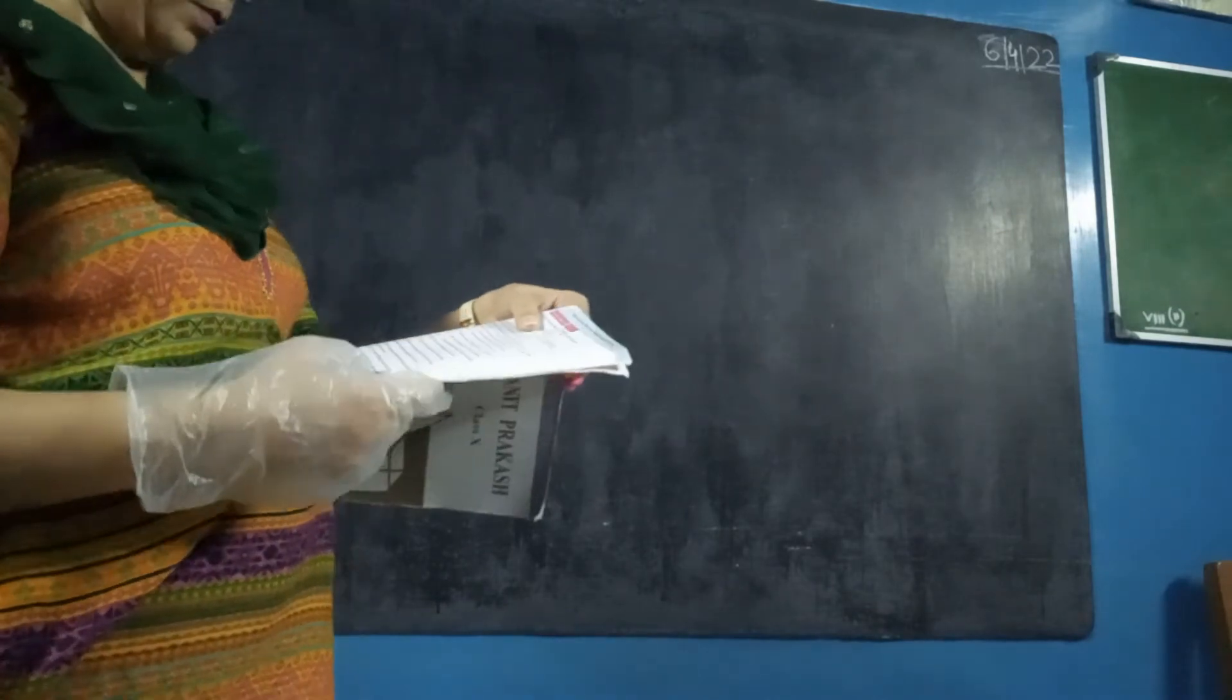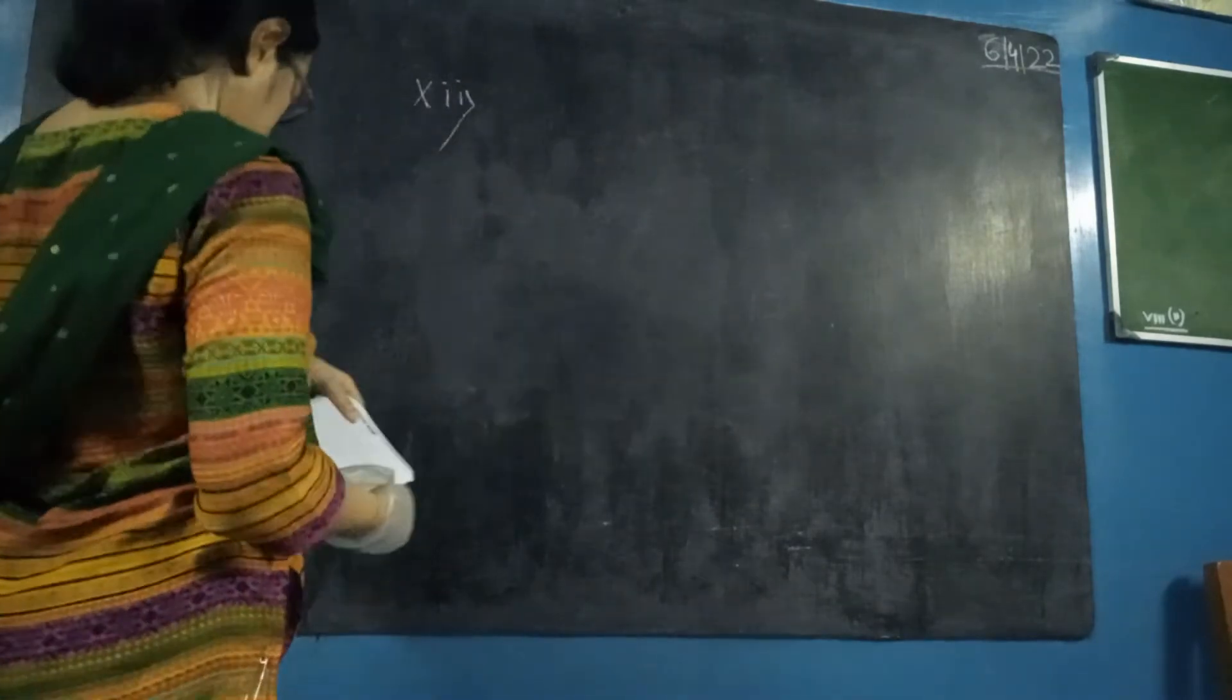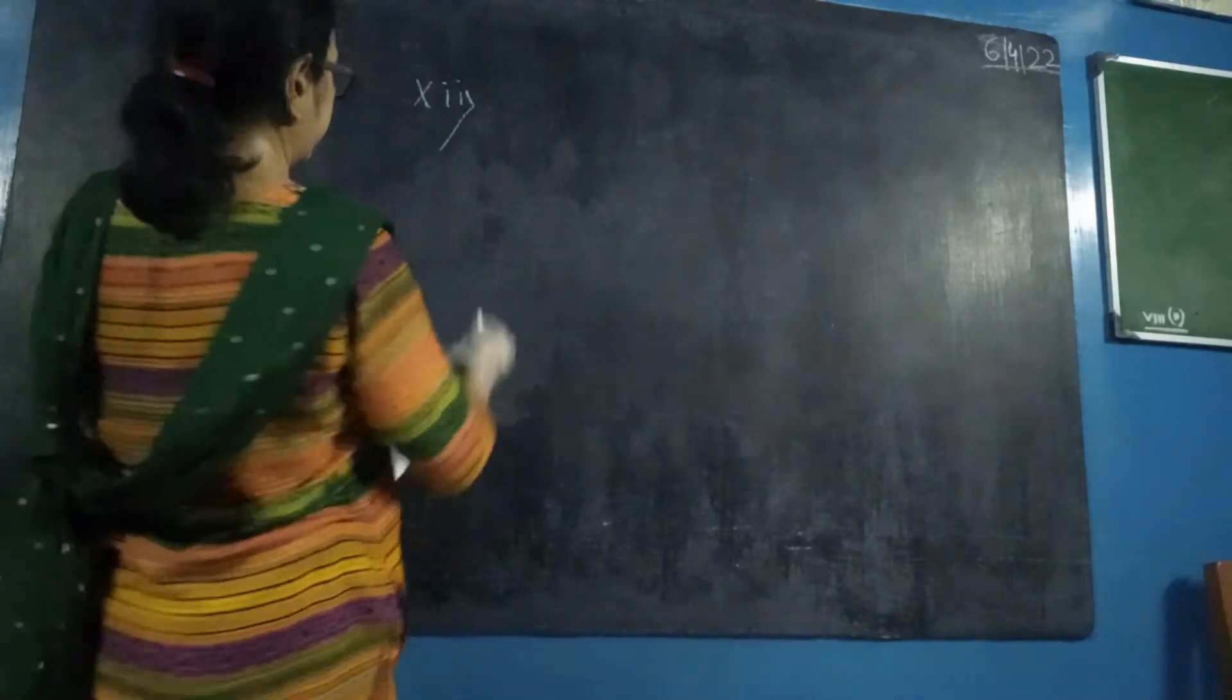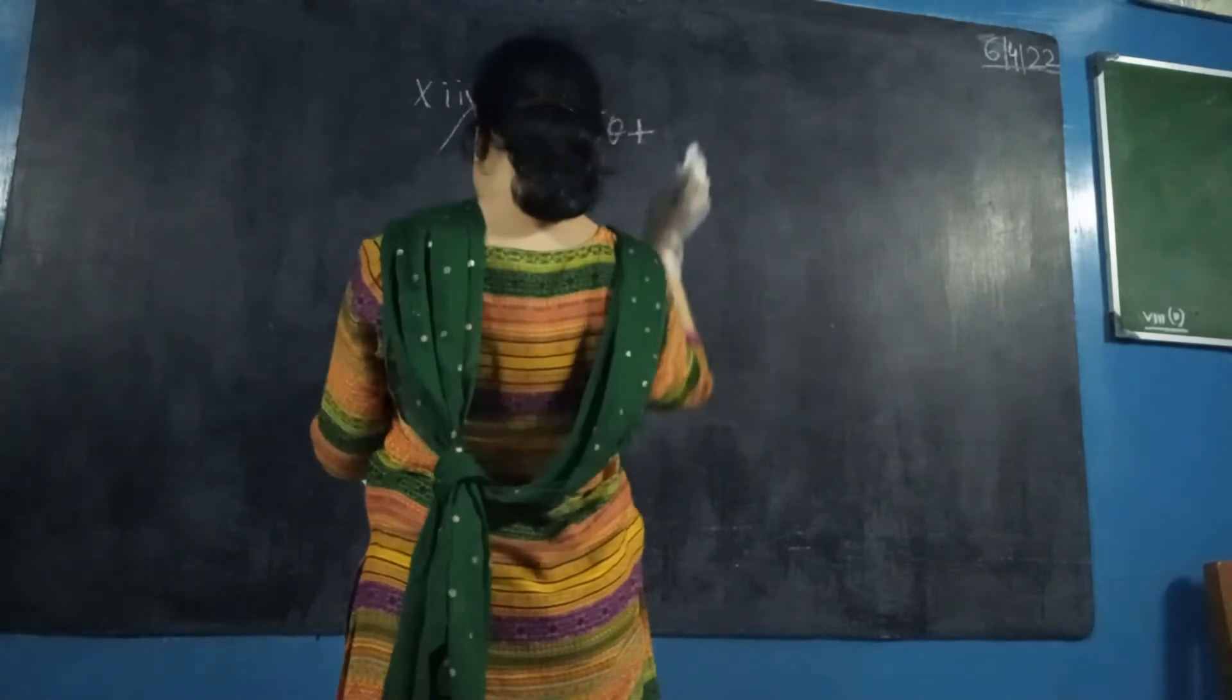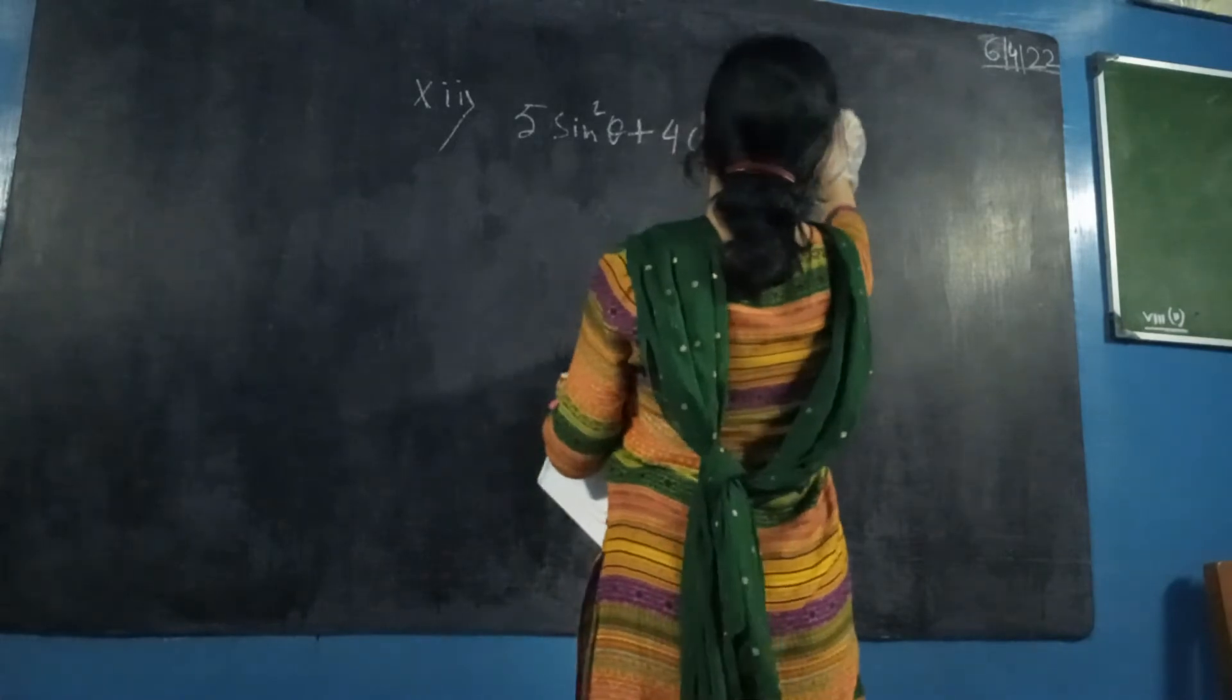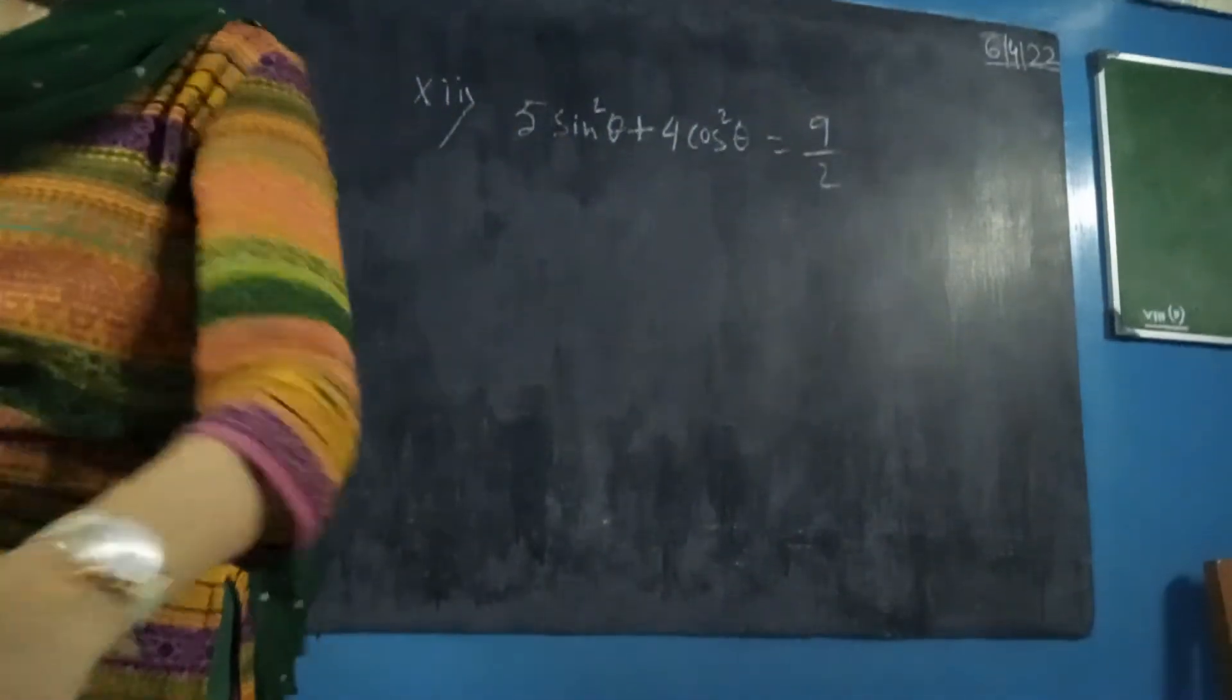Then next one, number 12. Calculate the value of tan theta from this relation. What is the relation? 5 sine square theta plus 4 cosine square theta equals to 9. Here I will apply the identity.